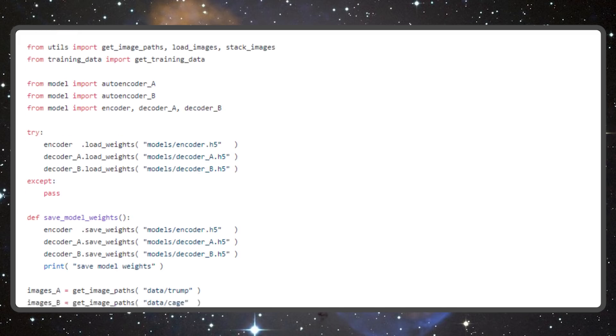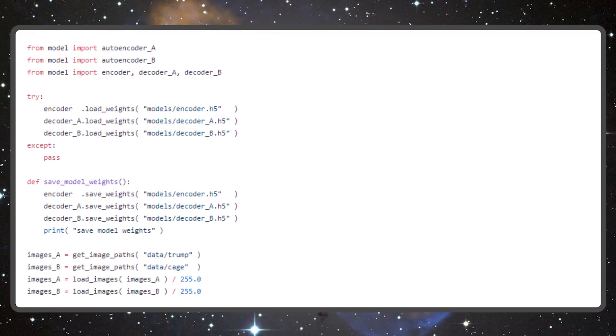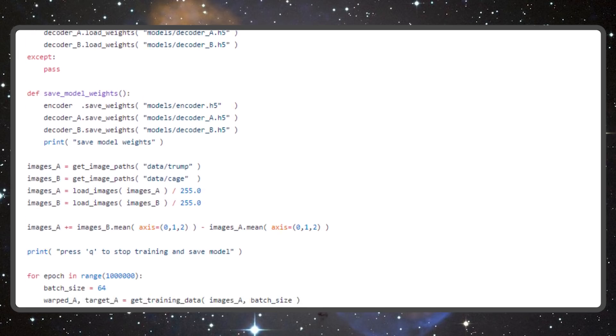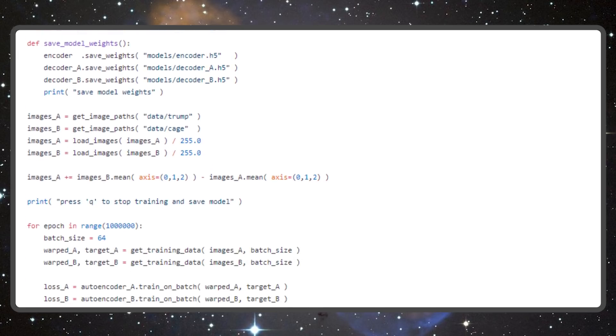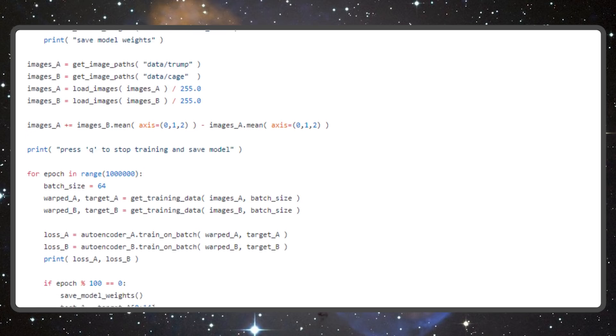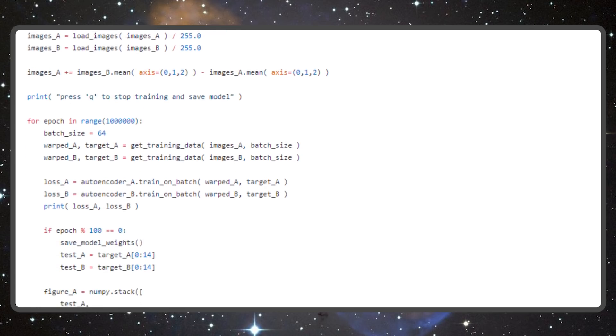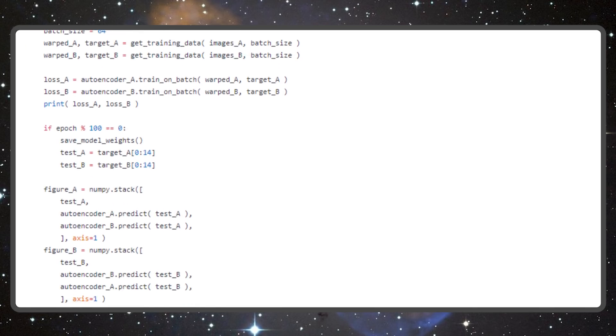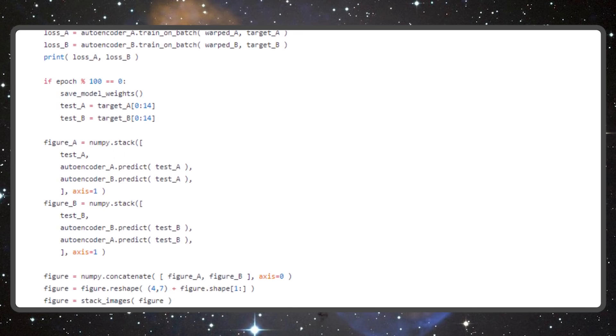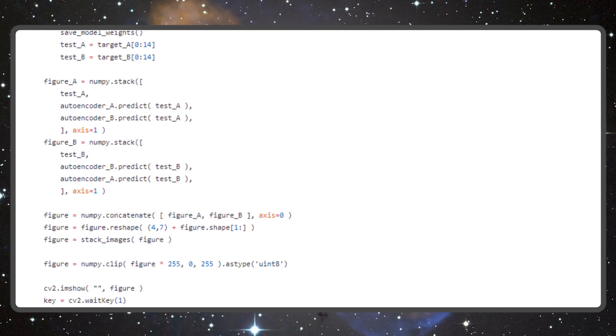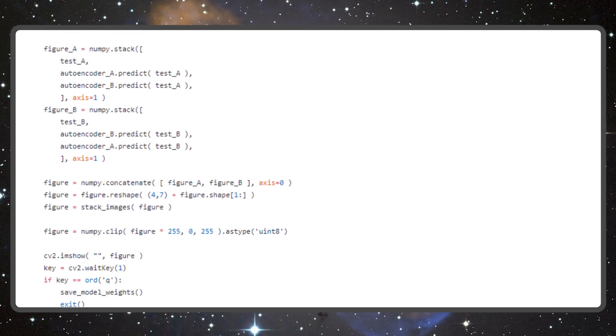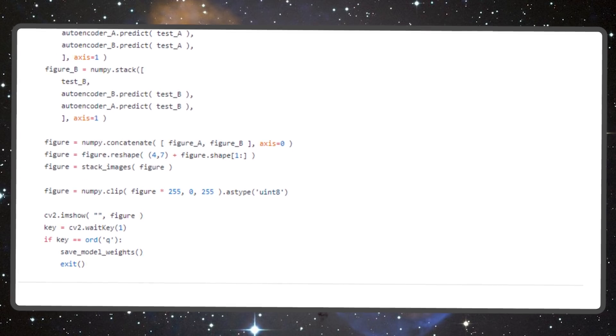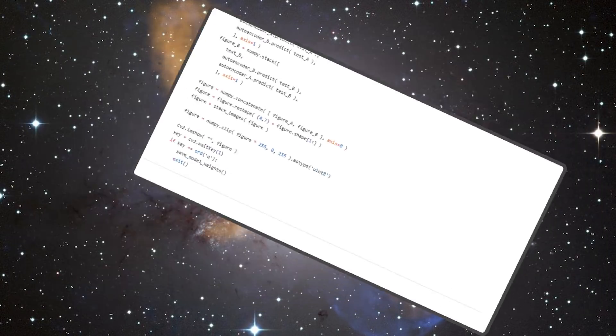After the network is done training we can feed it a video. A video is simply a collection of image frames. One by one we'll first crop out the target face from the video frame then perform a face swap on it. That means feeding image A to the encoder creating a base vector then feeding it to decoder B. Resulting in a face that looks like B which we can then overlay onto the original frame. Then we can concatenate all of those images together and watch the video result for ourselves.